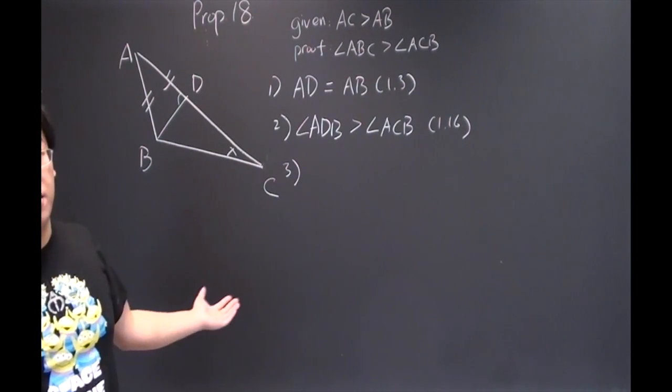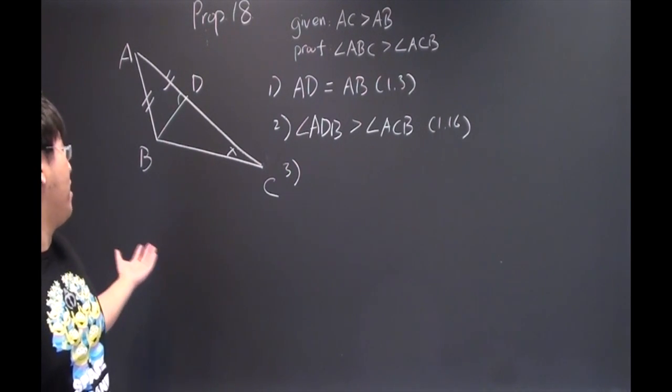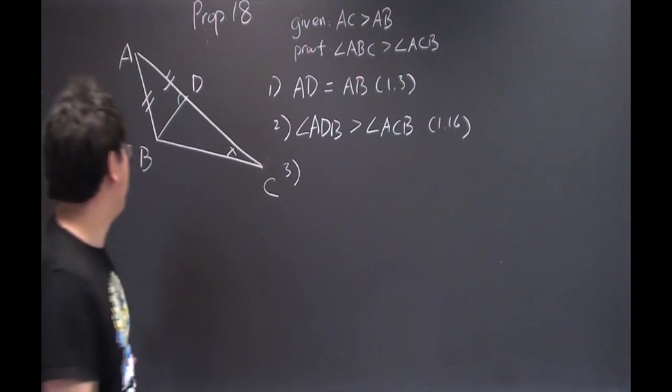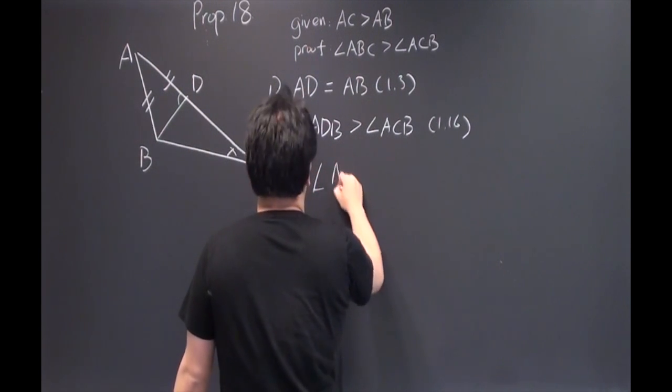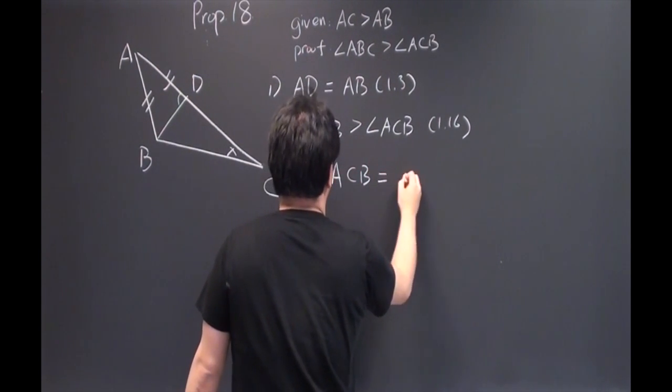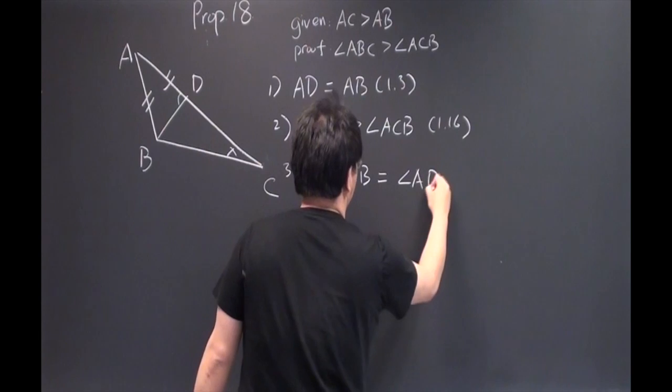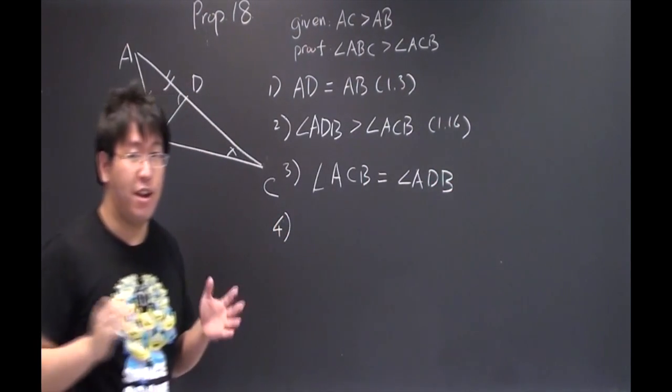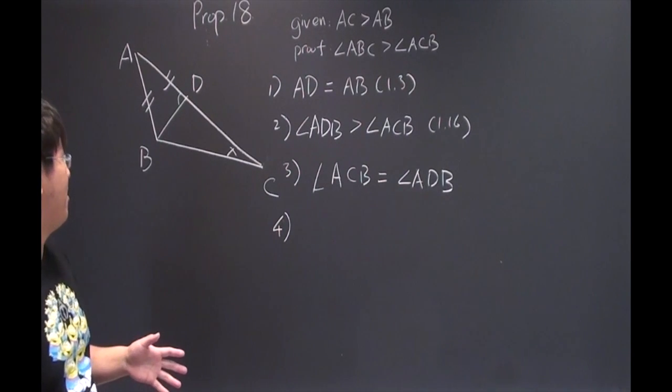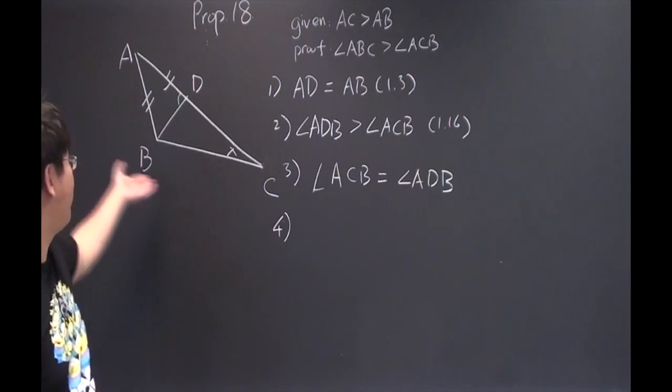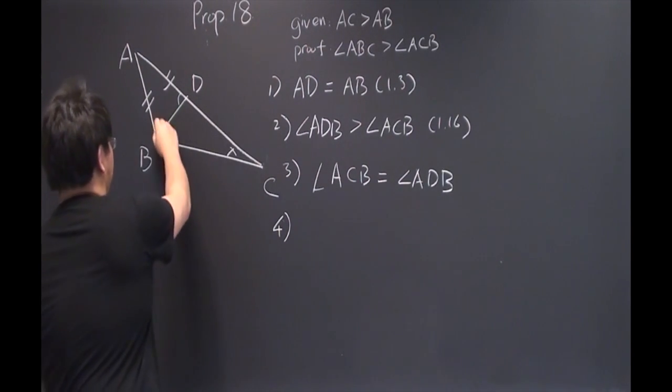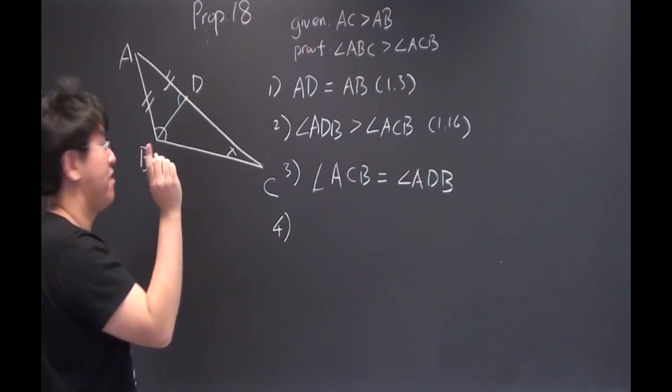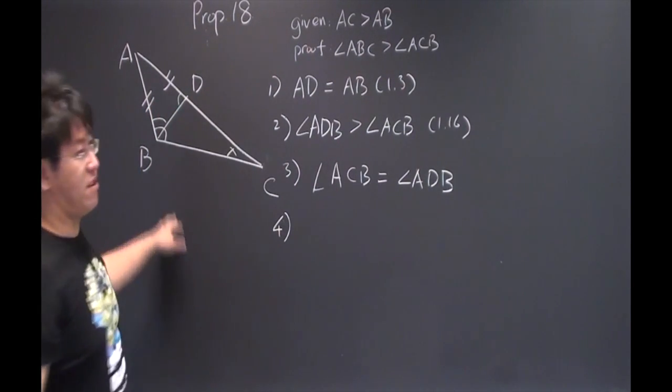And since we have a side AD which is equal to AB, it is clear that the angle ABD is equal to angle ADB. And it is also clear that the angle ABC is greater than angle ABD.